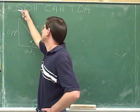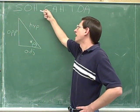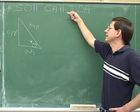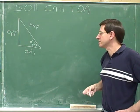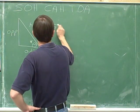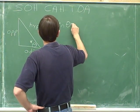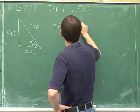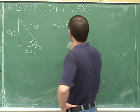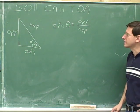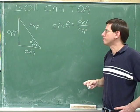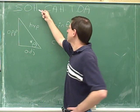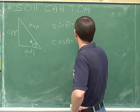So the sine is the opposite over the hypotenuse. The cosine is the adjacent over the hypotenuse. And TOA — the tangent is the opposite over the adjacent. For example, let's write down the sine of theta. Sine is the opposite over the hypotenuse. The sine of theta is the opposite side divided by the hypotenuse. How about the cosine? The cosine is the adjacent over the hypotenuse.